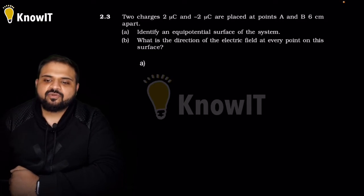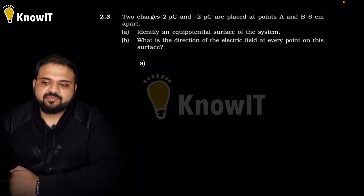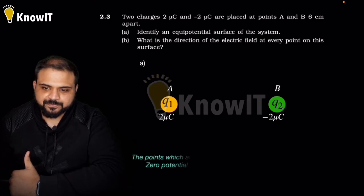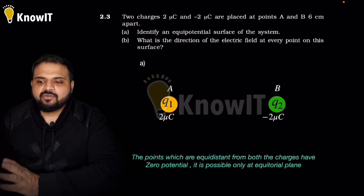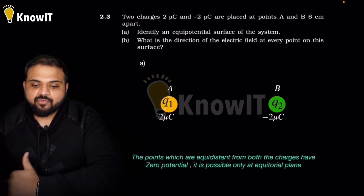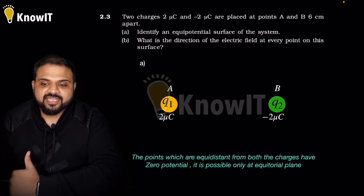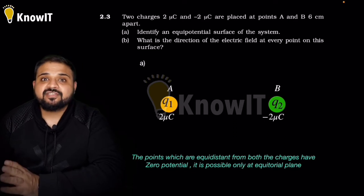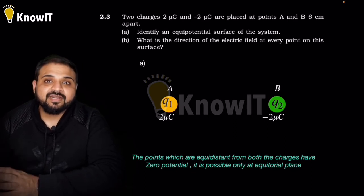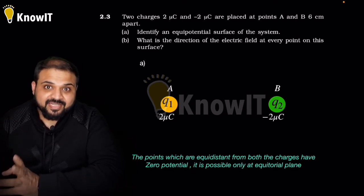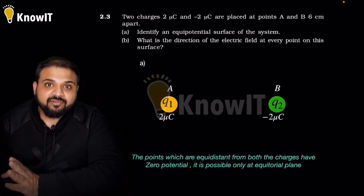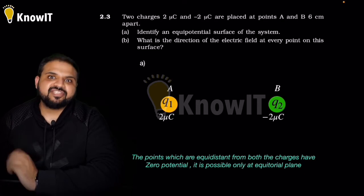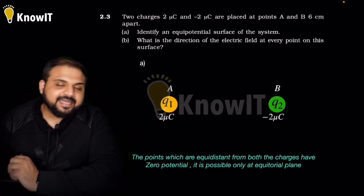Next: two charges 2 μC and −2 μC are placed at points A and B, 6 cm apart. We need to find the equipotential surface of the system. An equipotential surface is a surface where the potential due to both charges remains the same — that is, the same potential is maintained at every point on that surface.